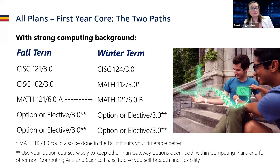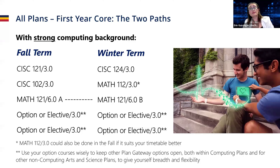In the fall term you're going to take CISC 121, CISC 102, and math — usually Math 121. Then your option courses or electives. In the winter term you go into CISC 124, Math 112, Math 121b (Math 121 is a full year course), and then your options or electives.